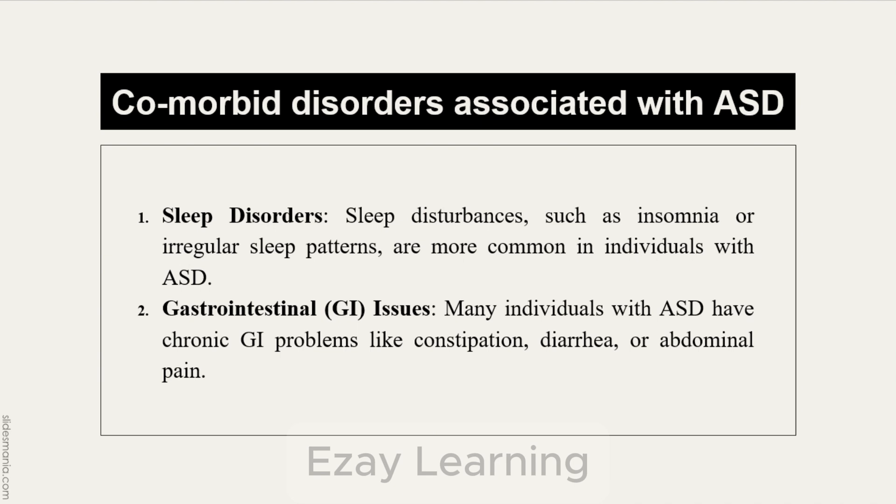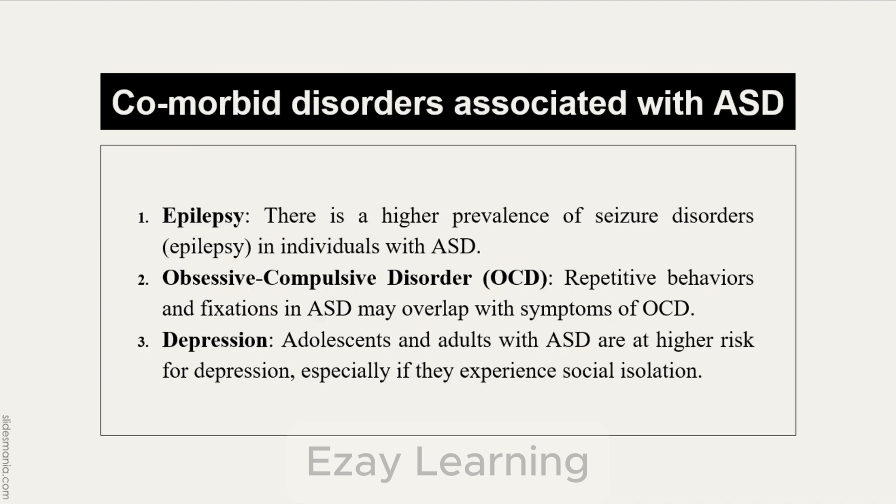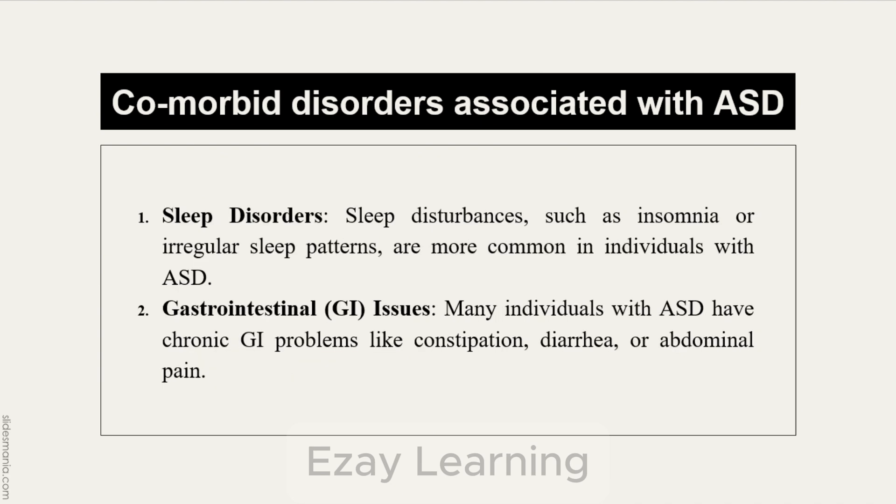So the names that we went through are: anxiety, ADHD, intellectual disabilities, epilepsy, OCD, depression, sleep disorders, and gastrointestinal issues. These are the disorders that occur or are associated with AST.